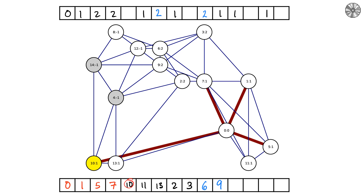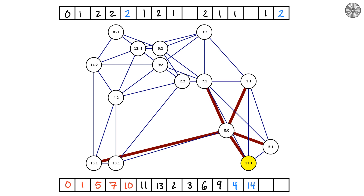We move on to node 10. Its neighbors not already known are four and 14. Since node 10 has distance one, four and 14 have distance two — we add them to the queue. Next, node 11: all of its neighbors are already measured, so we move on. Node 13 similarly has all neighbors already accounted for, so there is nothing more to do.